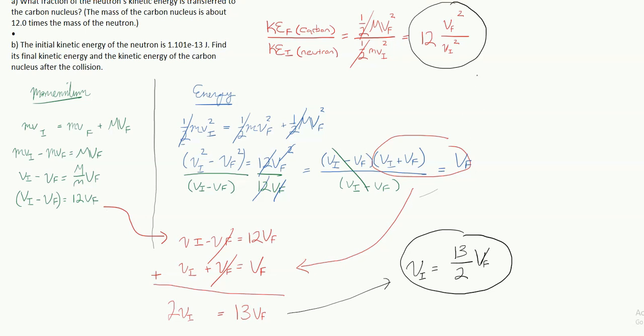And this expression here is going to help me solve this expression here. Let's see how. So what we're going to do is we're going to say 12 Vf squared divided by vi squared. Only instead of vi, I'm going to write 13 over 2, capital Vf squared. Which, long story short, is going to leave me with 12 times 2 over 13 squared. And actually that's it.